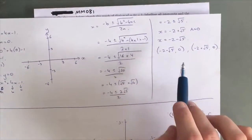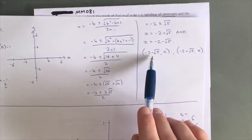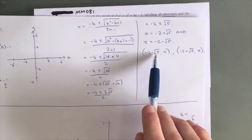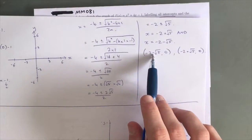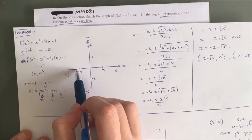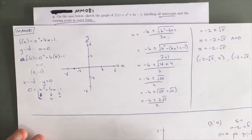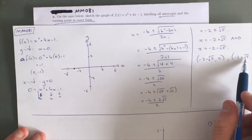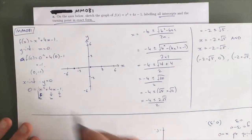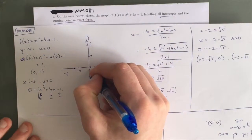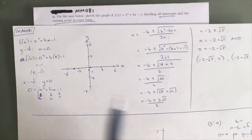Because this is a non-calculator question, we have to express everything in exact form. We know the square root of 5 is slightly over 2, because the square root of 4 is 2. So negative 2 take away slightly more than 2 is going to be just less than negative 4 — our first x-intercept is here. And negative 2 plus just over 2 is just over 0, so our second x-intercept is here. We know our x-intercepts, our y-intercept at negative 1, and all we need now is the turning point.